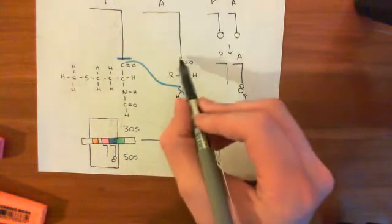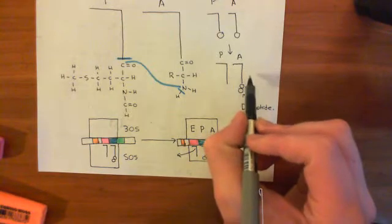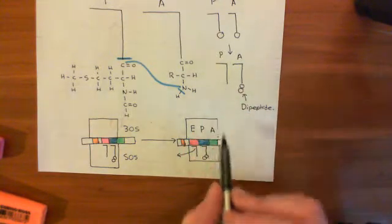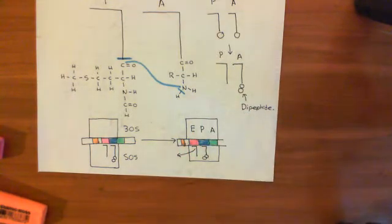So what you'll do now is cleave this bond here and transfer all of that onto the amino group of the third amino acid. So you'll get a tripeptide. And you continue on in that process, and you build a polypeptide.